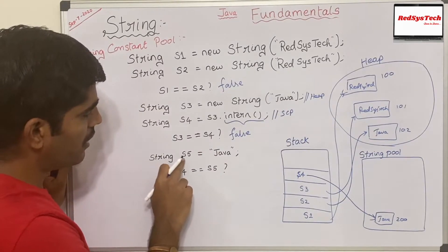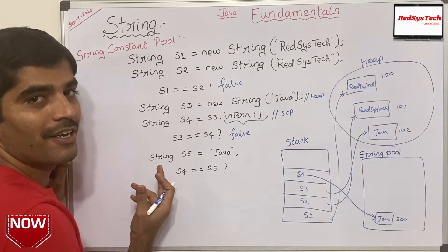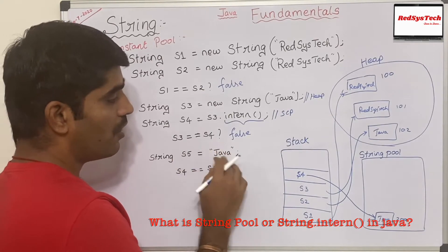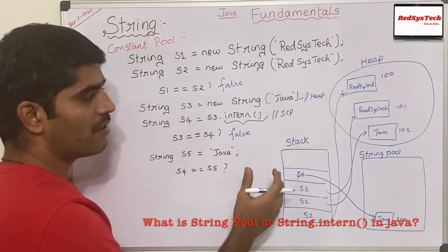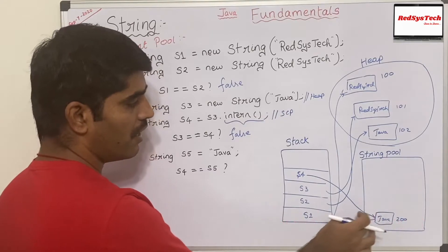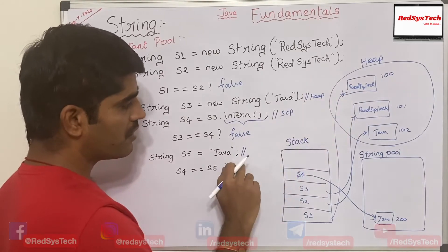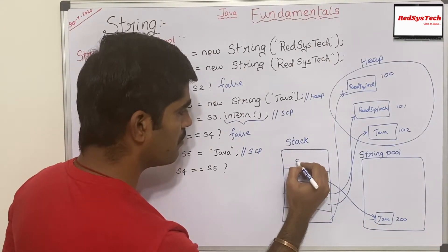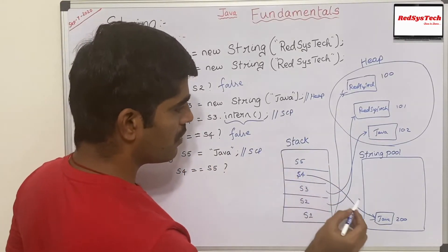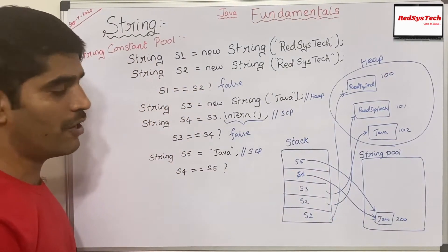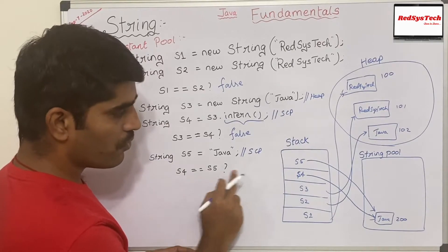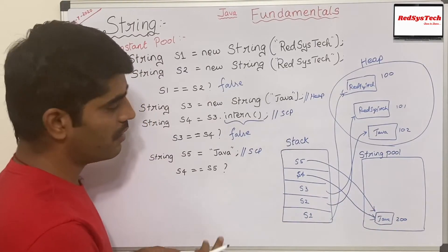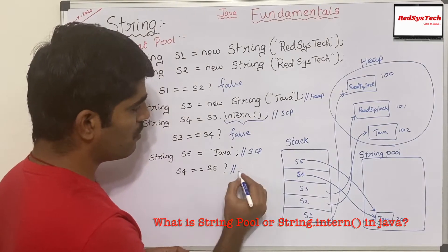Now: String s5 = "java". This is another way of creating a String object. When you create a string using a literal, Java always checks whether that object already exists in the String Pool. If it exists, it returns from there; otherwise it creates a new object. Since an object with value 'java' already exists in the pool at address 200, it does not create a new heap object — it returns directly from the SCP. So s5 also refers to address 200, same as s4.